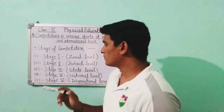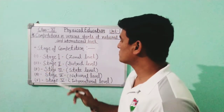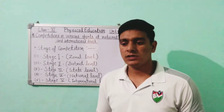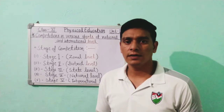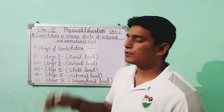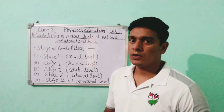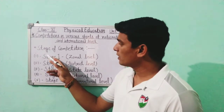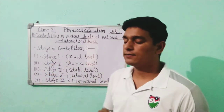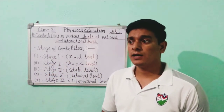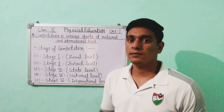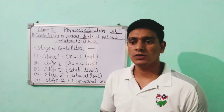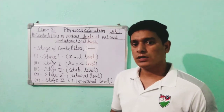Stage one is the Zonal level. Generally, we start from the school level with intramural competitions, but we are talking about bigger competitions. After intramurals, there are extramurals, and then Stage 1: Zonal level competitions. For example, CBSE cluster competitions are a zonal level competition where different school teams participate.